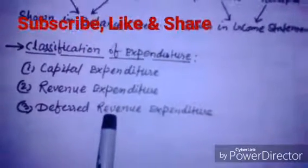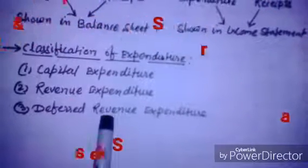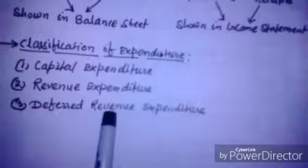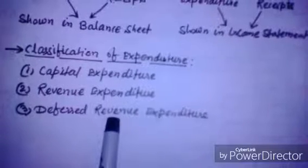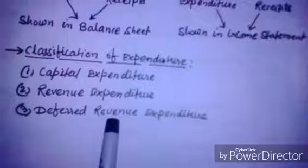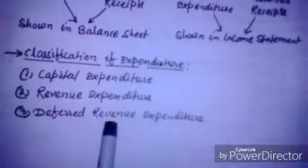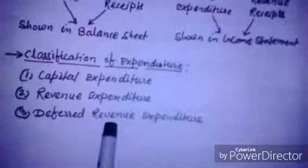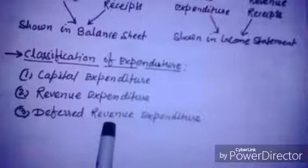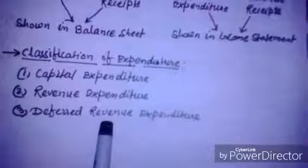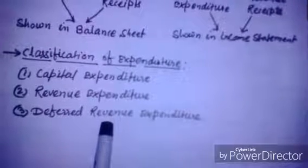Accounting treatment for deferred revenue expenditure: first, as the benefit accrues in future periods, it is not charged to the profit and loss account of the current year — it is capitalized. Second, it is written off over a number of years, usually three to five years. The portion of deferred revenue expenditure to be written off in a particular accounting year is treated as an expense and transferred to profit and loss account. For example, if the benefit of advertisement may continue for five years, then only one-fifth of this expenditure should be considered as revenue expenditure for the year and taken to profit and loss account, with the rest carried to balance sheet. The portion not yet written off at the end of the period is recorded on the asset side of the balance sheet.